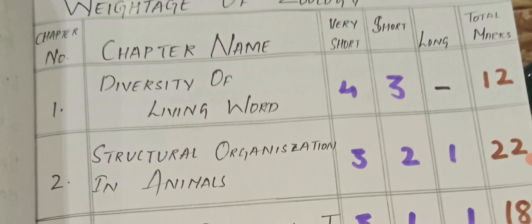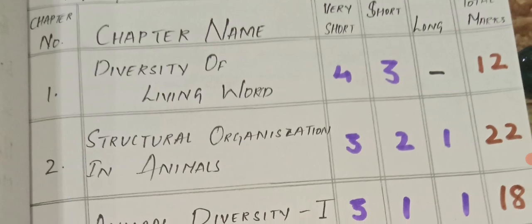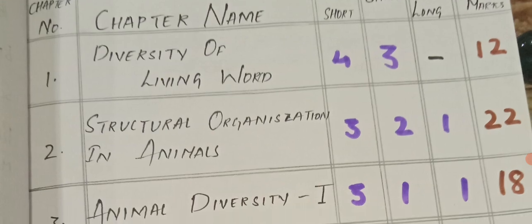The first chapter, Diversity of Living World: 4 VSAQs and 3 SAQs are coming this year according to the latest model paper released by Board of Intermediate.